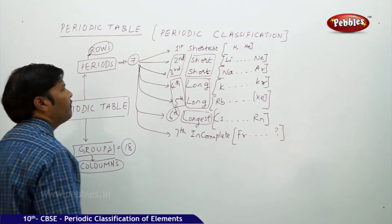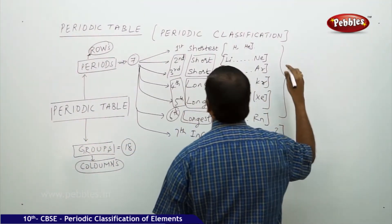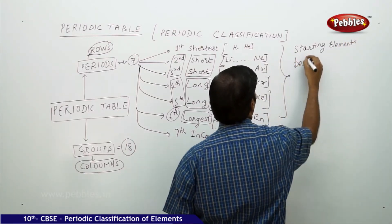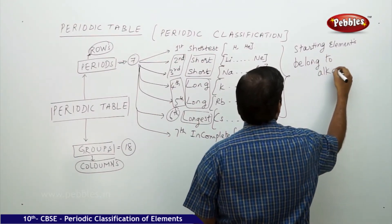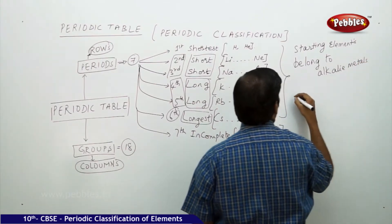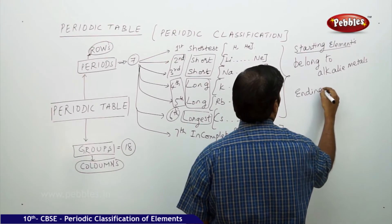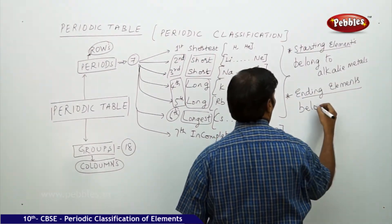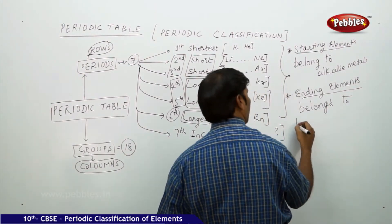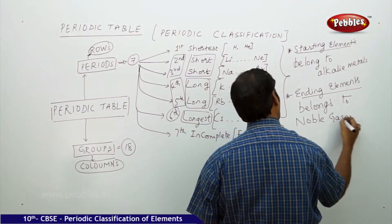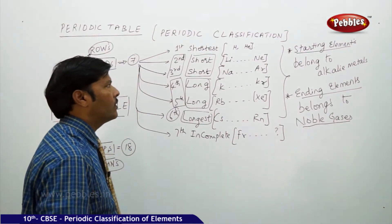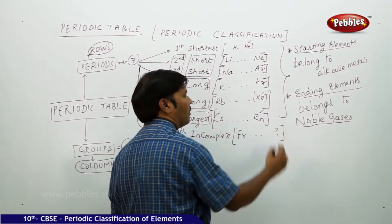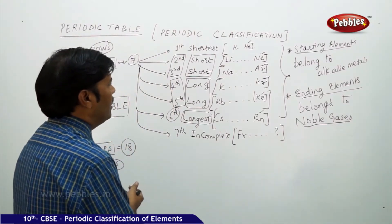You can notice that in every period, the starting element belongs to alkali metals, and the ending element belongs to noble gases — helium, neon, argon, krypton, xenon, and radon. So every period starts with an alkali metal and ends with a noble gas.